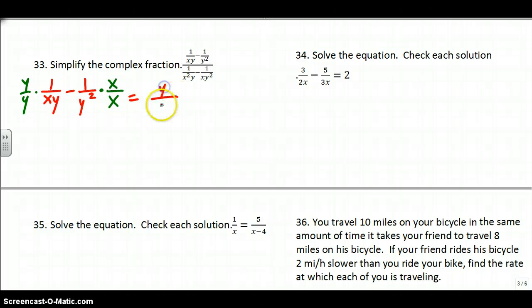Then you just multiply these things. You get y over xy squared minus x over xy squared. And now that they have common denominators, that just becomes y minus x over xy squared. So I'm going to change the top part to that. That's the top.